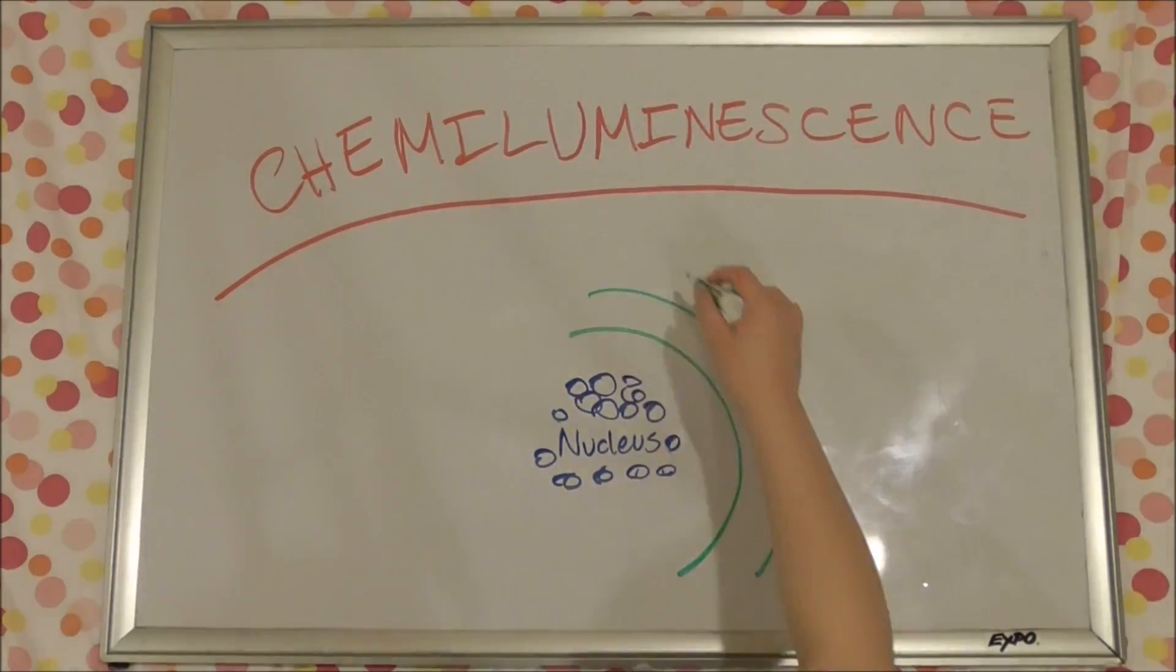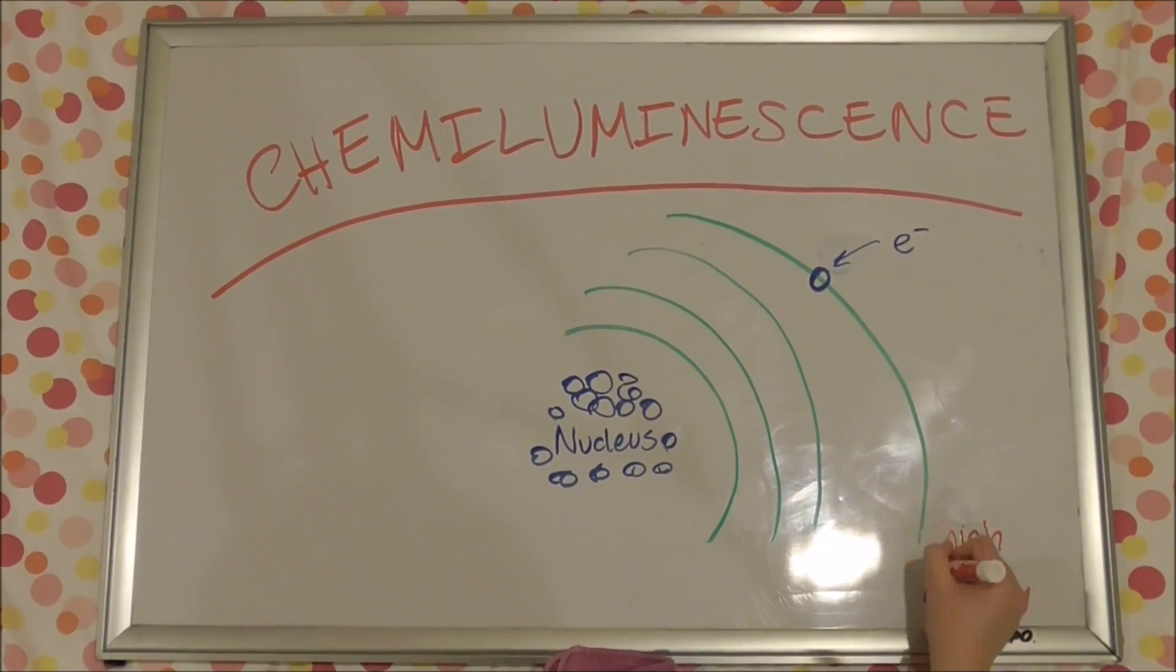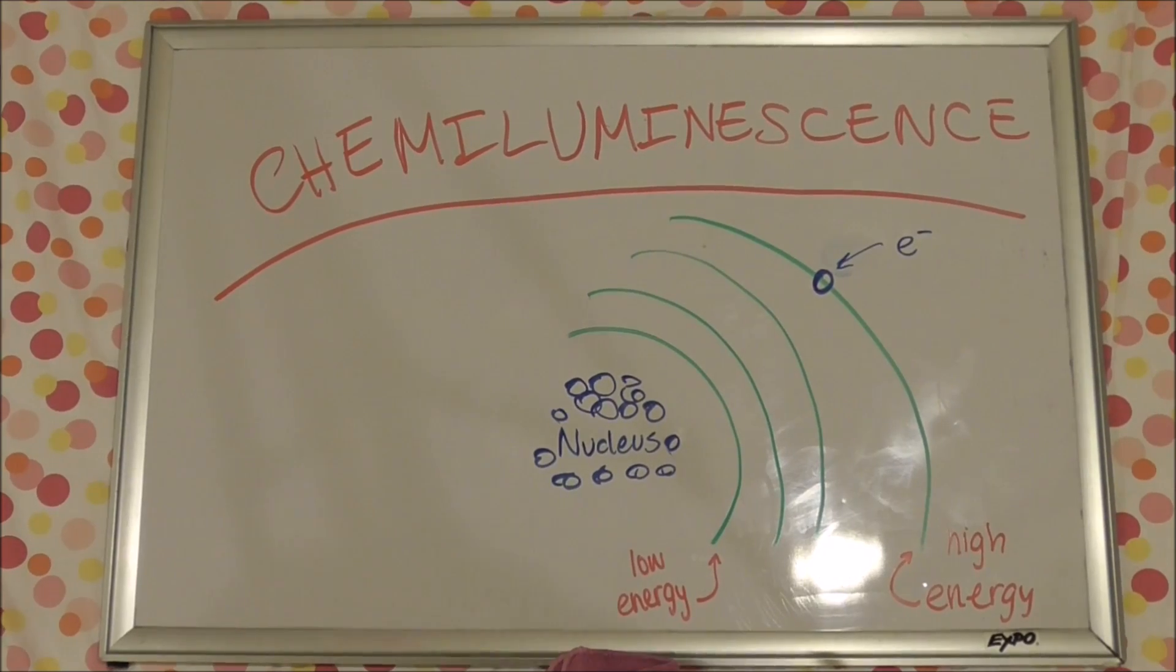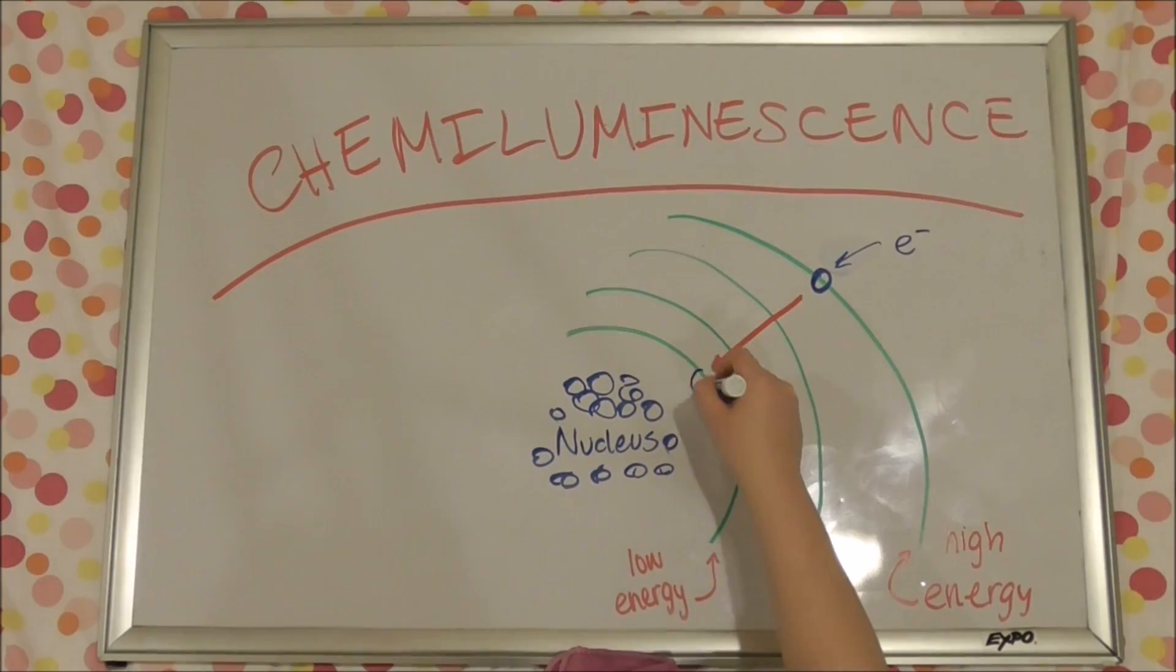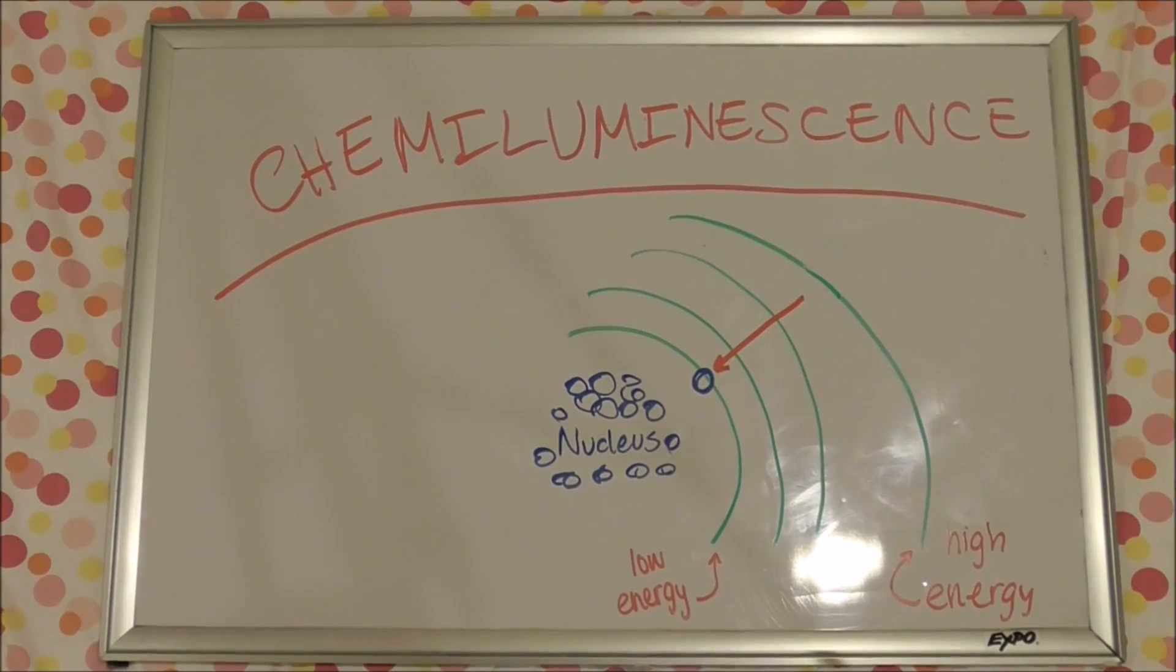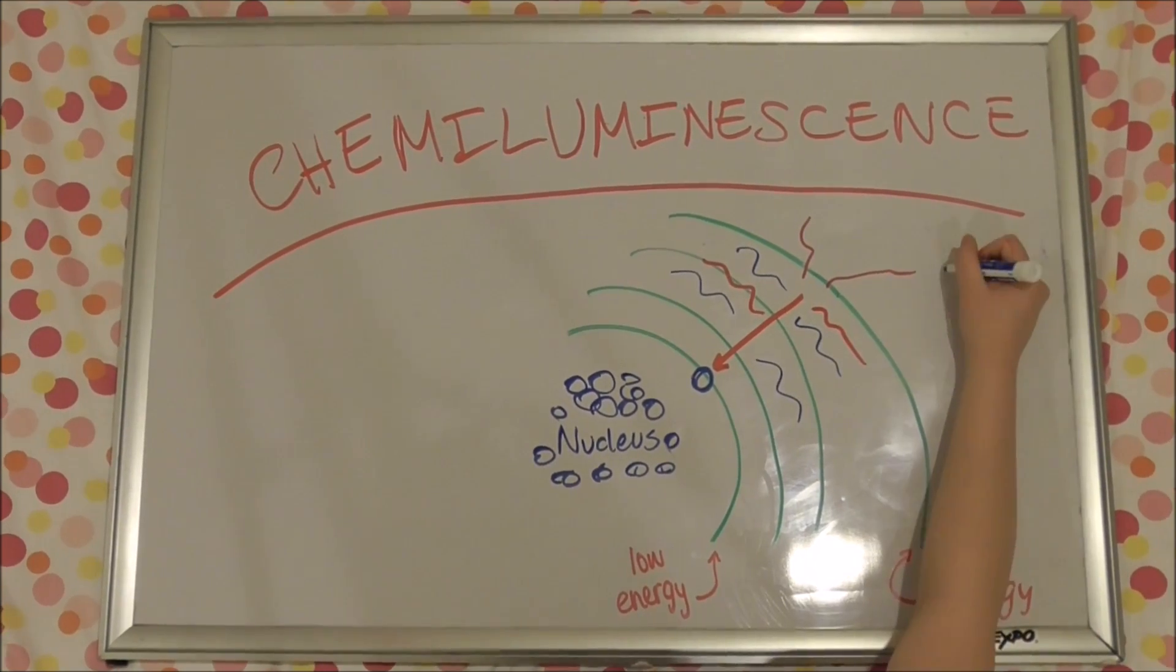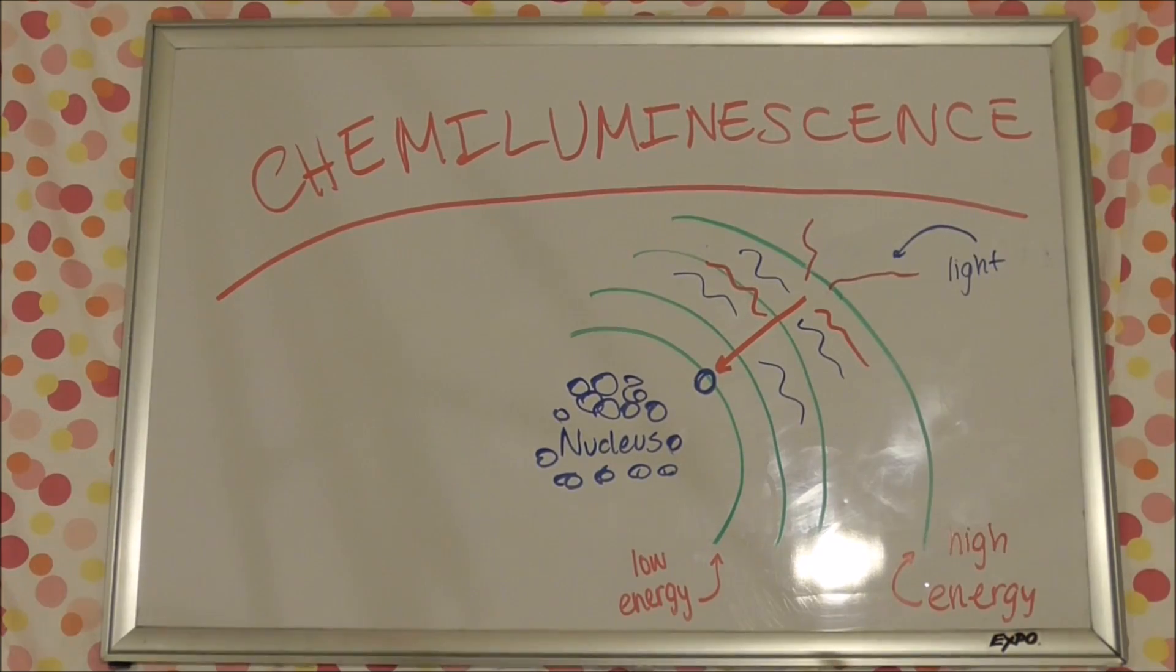So basically what's happening with the molecules is that you have an electron in a high energy state. And what that electron wants to do is get to its lower energy state so it can be more stable. And so when the electron drops to a lower energy state, it emits energy in the form of light.